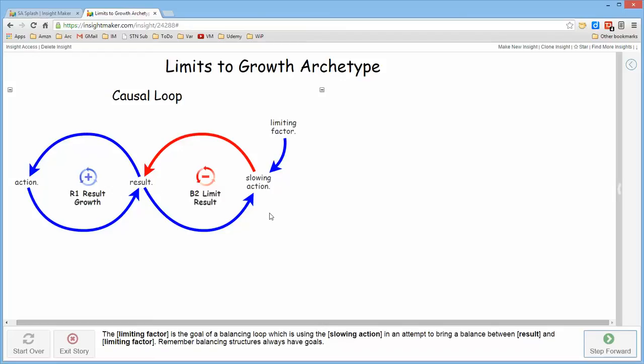Now the causal loop diagram doesn't give you a sense of the manner in which the slowing action actually affects the result. It could be in one of a couple of different ways which I'll point out when I do the simulation version of this diagram.